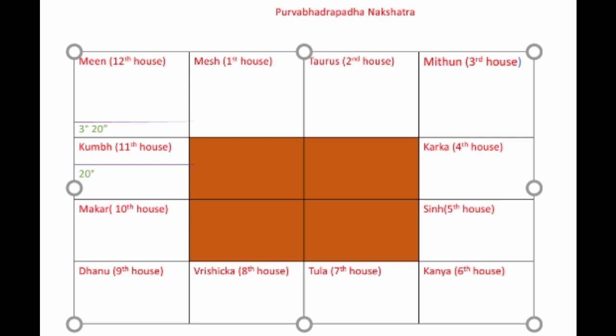If at the time of your birth the moon was placed between these two purple lines, then your Janma nakshatra is nothing but Purvabhadrapada nakshatra.